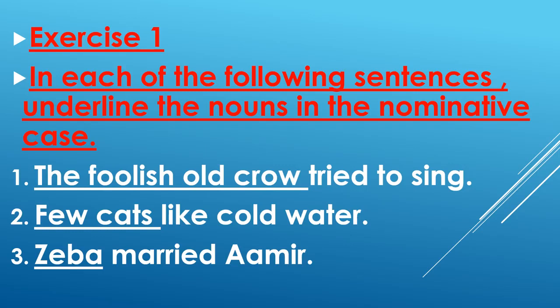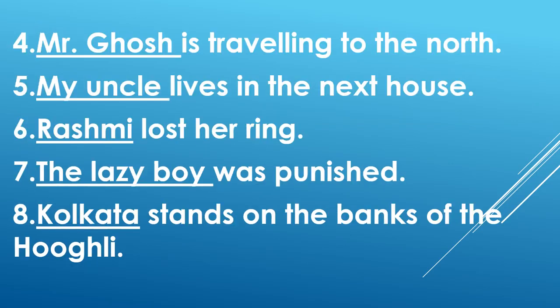The third sentence is: Zeba married Amir. What is the subject? Zeba. So it is in nominative case, so underline Zeba. The fourth sentence is: Mr. Ghosh is traveling to the north.